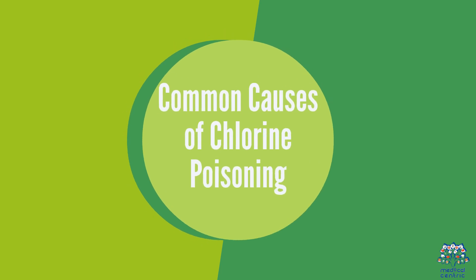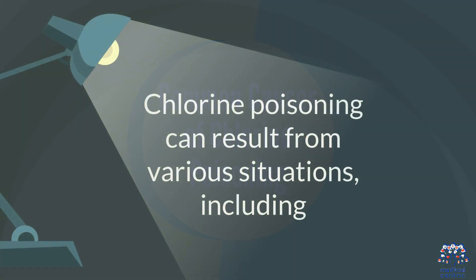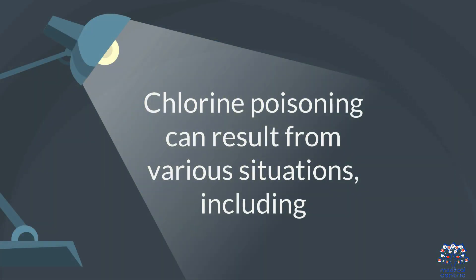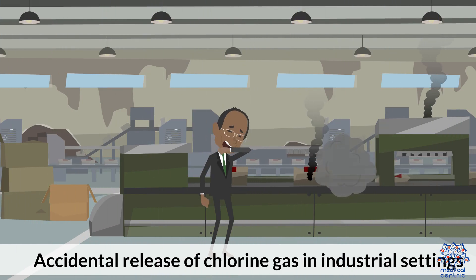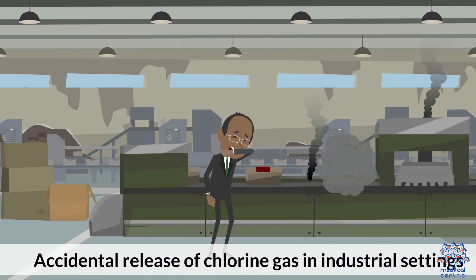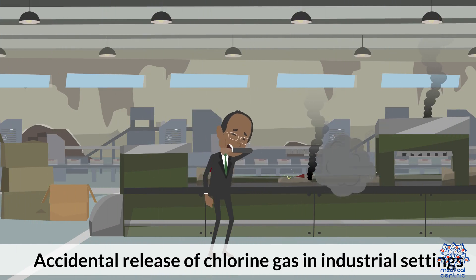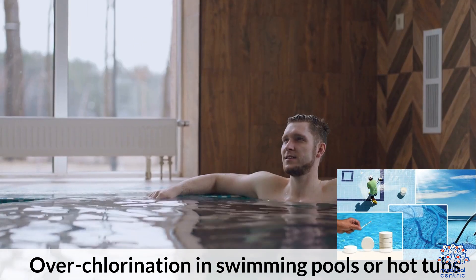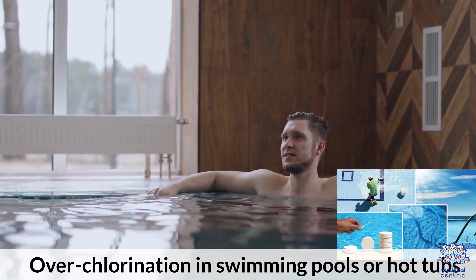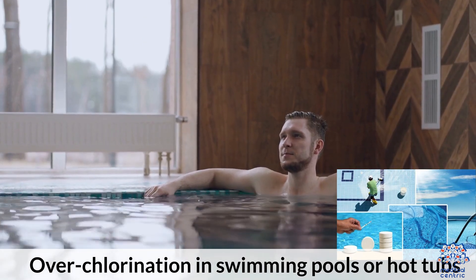2. Common Causes of Chlorine Poisoning. Chlorine poisoning can result from various situations, including industrial accidents — accidental release of chlorine gas in industrial settings — and swimming pools, such as over-chlorination in swimming pools or hot tubs.